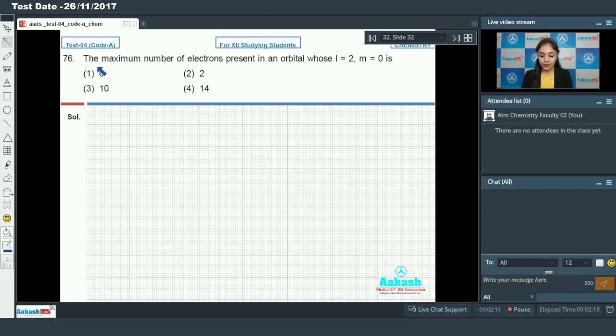Question number 76 says the maximum number of electrons present in an orbital whose l value is equal to 2 and m value is equal to 0. What has already been mentioned here? The orbital. If there is any orbital, how many electrons can come? Only 2. Because each orbital can only occupy 2 electrons. If there is any value of l or m, if there is an orbital mentioned, the number of electrons will always be equal to 2. So option number 2 is our correct answer.